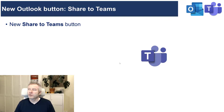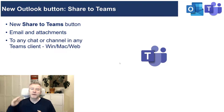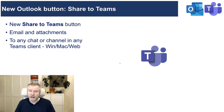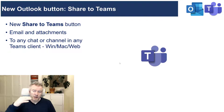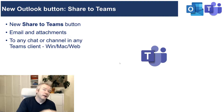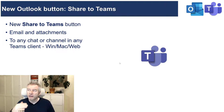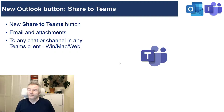A new Share to Teams button is also coming to Outlook. This will send the email and its attachments straight into any Teams client with one click. Currently you can do this by going to your team, clicking the ellipsis on a channel to get its email address, then going back to Outlook and forwarding to that address — but the new button is a lot simpler.